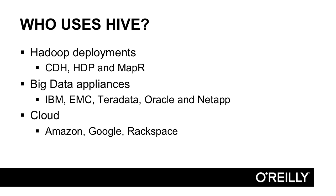For cloud deployments, you can run Hive directly against Amazon S3 buckets, or across Amazon's Hadoop-like tool called Elastic MapReduce, or you can deploy Hadoop itself on Amazon EC2 instances and run Hive across that cloud cluster. Similarly, you could deploy Hive on Google's cloud or on Rackspace.